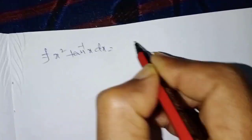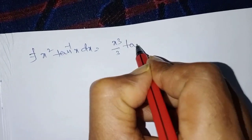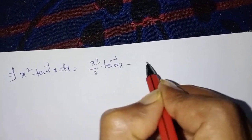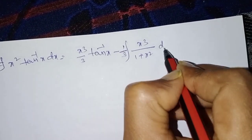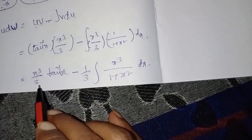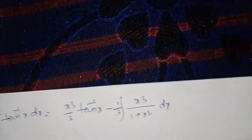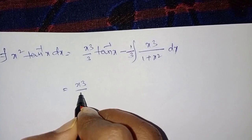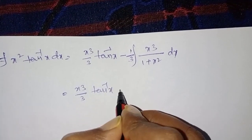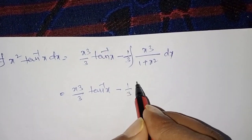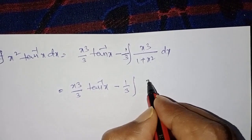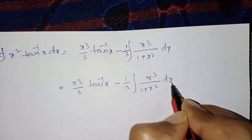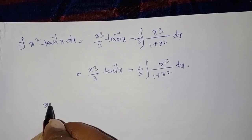So ∫x² tan⁻¹x dx equals x³/3 times tan⁻¹x minus (1/3)∫x³/(1 + x²) dx. Now observe the remaining integral — the numerator is x³ and the denominator is 1 + x².